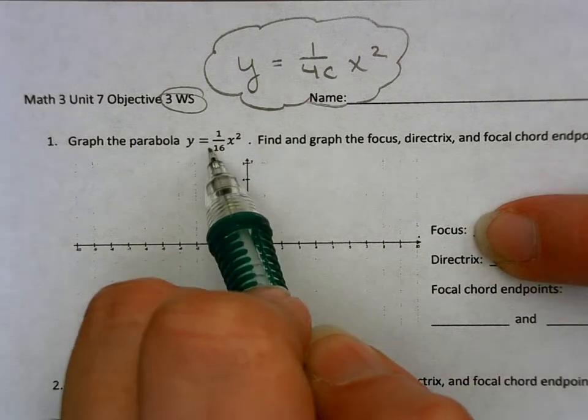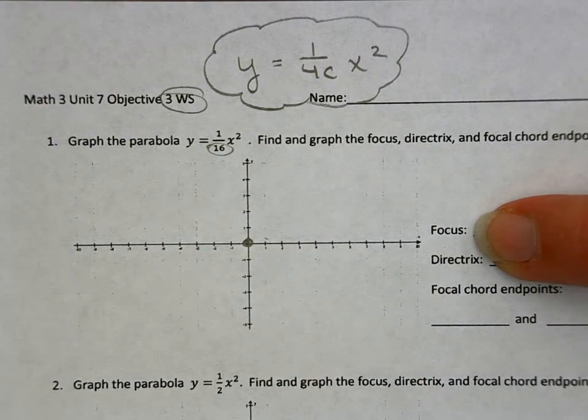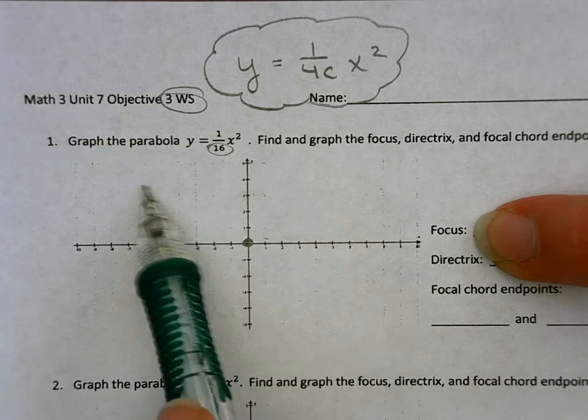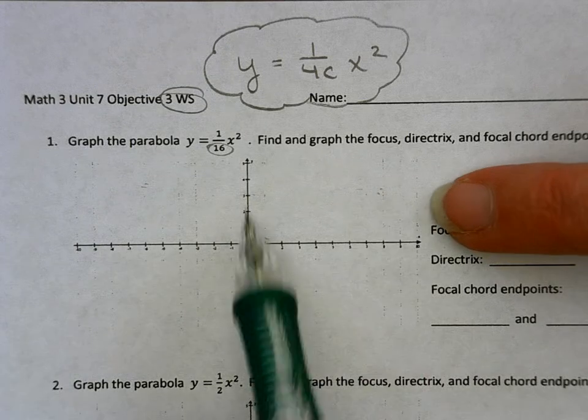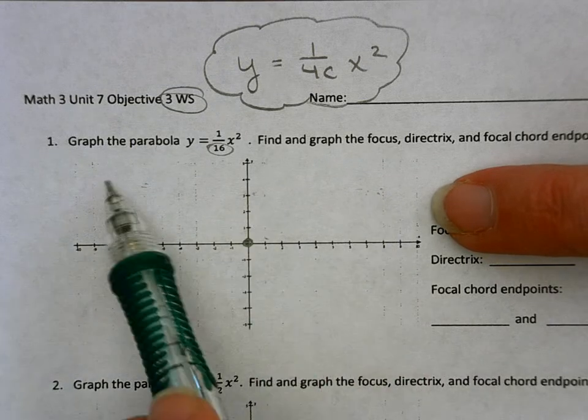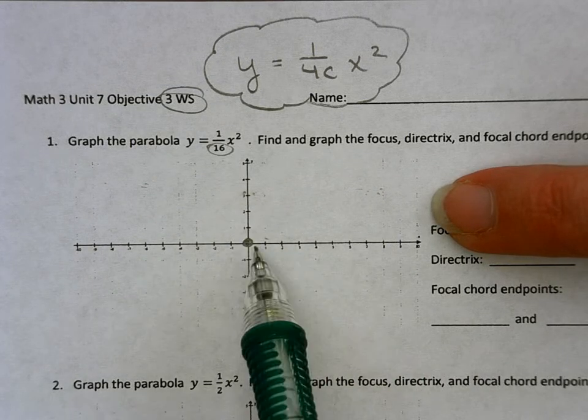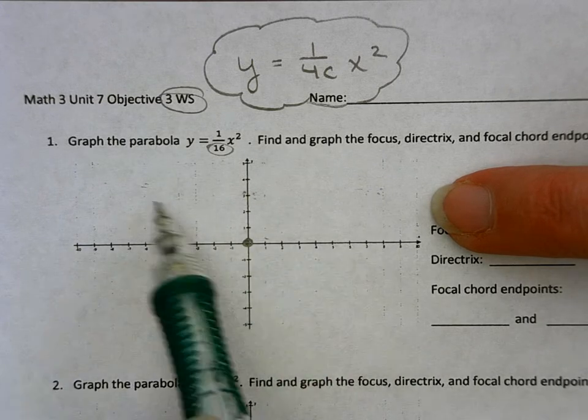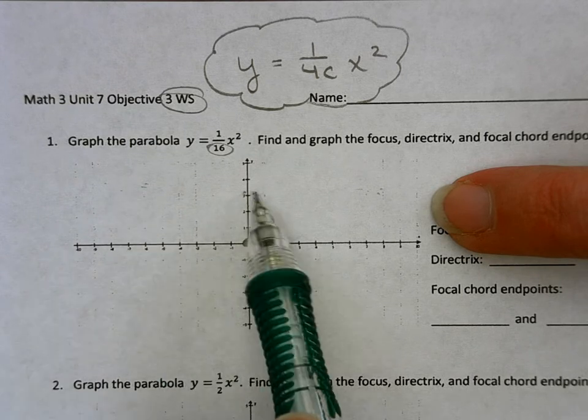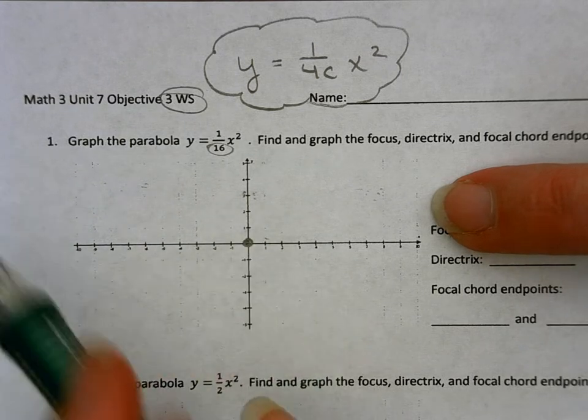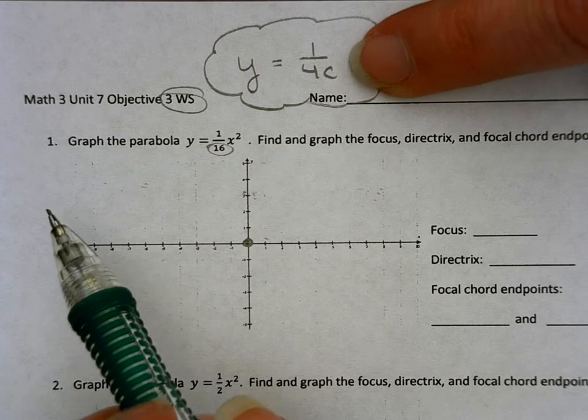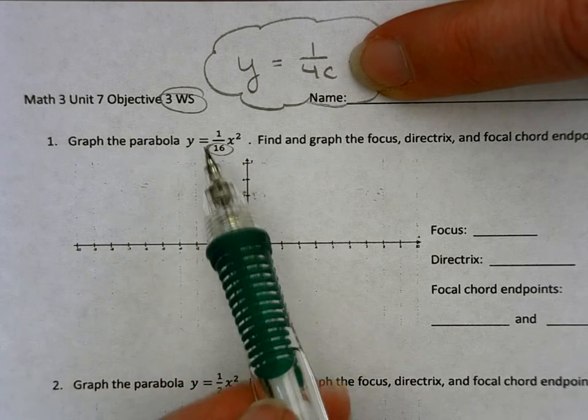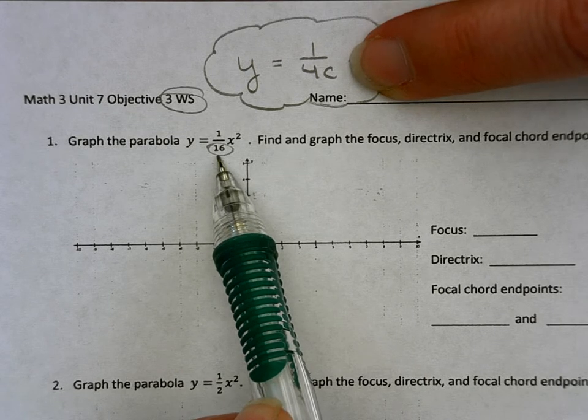I know that my focal chord length is going to be 16. So wherever my focus ends up being, I know that that distance between those two endpoints needs to be 16. So I would have to go over 8 or left 8. But I first need to figure out where is that focus. Because if I don't have the focus, I don't know where to put that 16. So that's what this c is all about. It tells me how far I need to go to find that focus, and then I can use the 16 to find the focal chord endpoints.